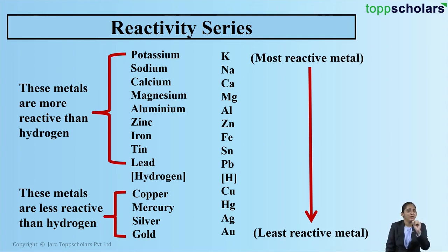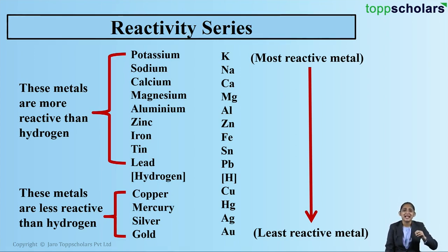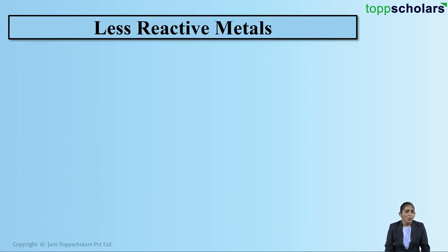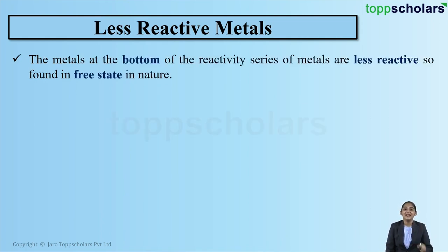Can you tell me which is the most reactive metal? It is potassium. And which is the least reactive metal? It is gold, because it is placed at the bottom of the reactivity series. Metals which are placed at the bottom of the reactivity series are called less reactive metals.